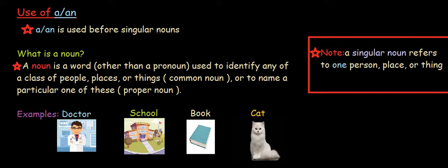For an example, doctor. It refers to a person. School. It refers to a place. Book. It refers to a thing. Cat. It refers to a type of an animal.